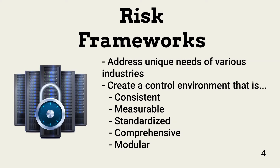Consistency ensures that the governance program consistently oversees and inspects for management expectations in how security and privacy are managed. Measurability enables an organization to set goals and determine how well those goals are met. Frameworks usually include methods for accomplishing this. Standardization enables all parts of an organization to be assessed in the same way. Comprehensiveness ensures that risk management includes statutory and regulatory requirements, as well as requirements mandated by organization policies. Modularity enables changes to how an organization manages risk — only the areas that need changes are updated when management's or government's expectations change.